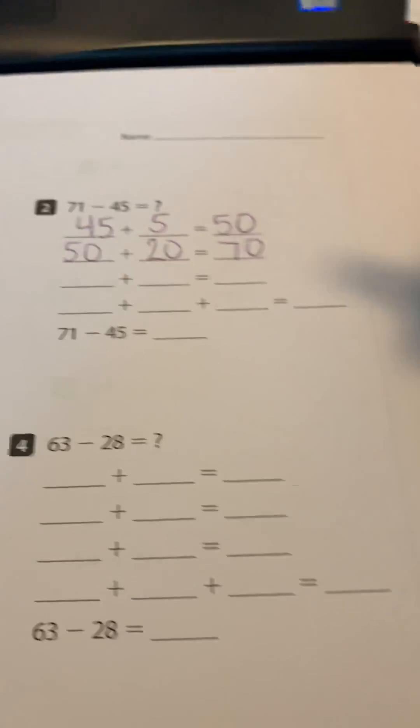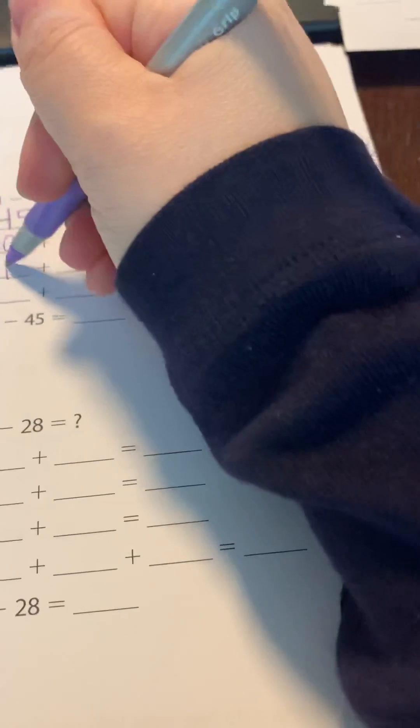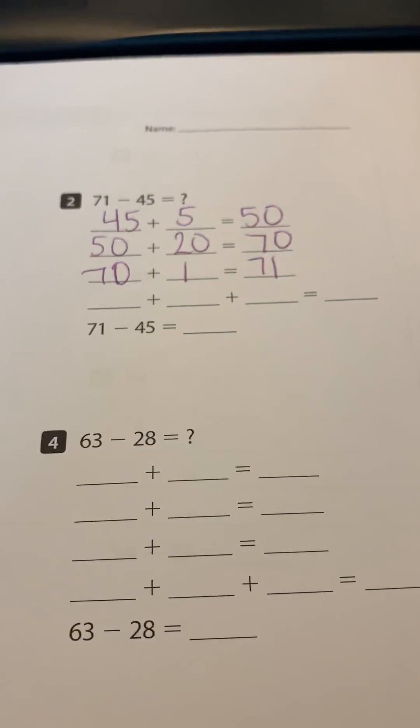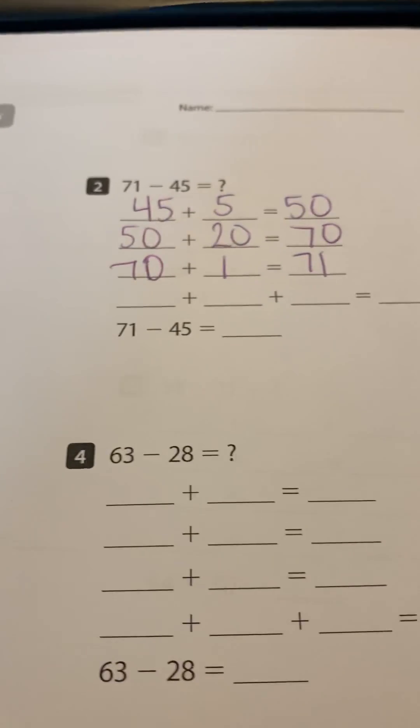Now I have to get to 71, which means I need to add... oopsies, I have 70. I want to add one more to get to 71.